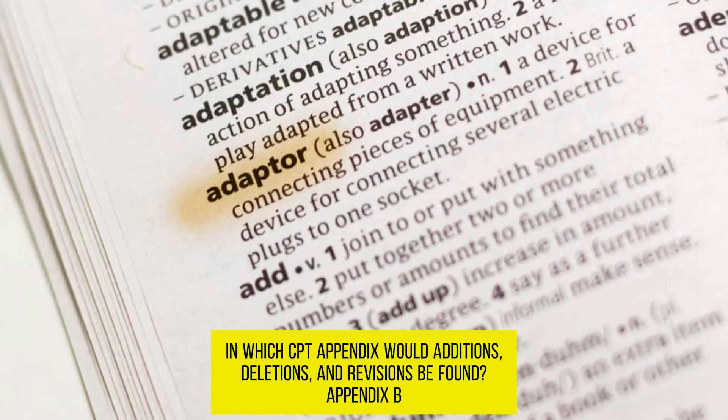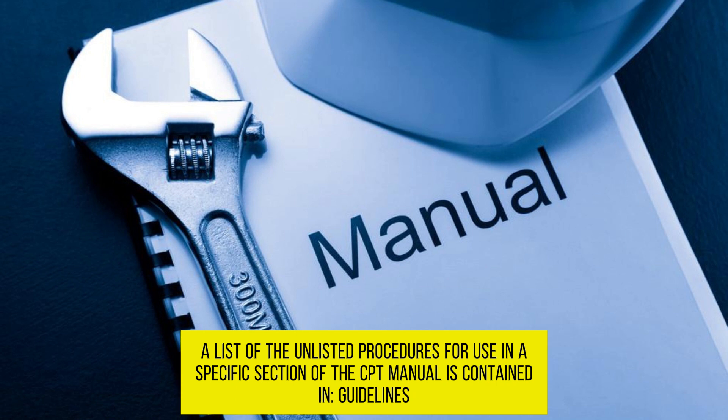In which CPT appendix would additions, deletions, and revisions be found? Appendix B. A list of the unlisted procedures for use in a specific section of the CPT manual is contained in guidelines.